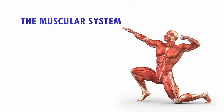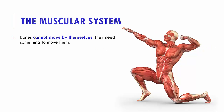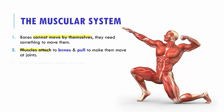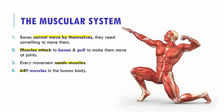Now let us meet muscle man and talk about the muscular system of our body. Bones cannot move all by themselves without support — they need something to move them. That's why we have muscles attached to bones that can pull to make our bones move at the joints. Every movement in our body requires muscles; without muscles we cannot move our body.